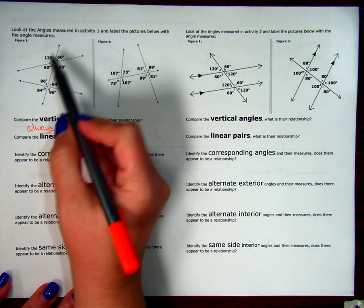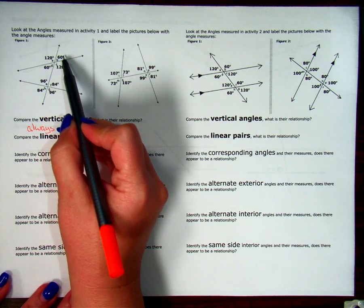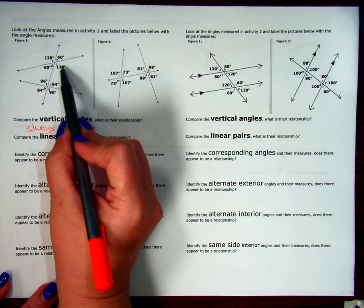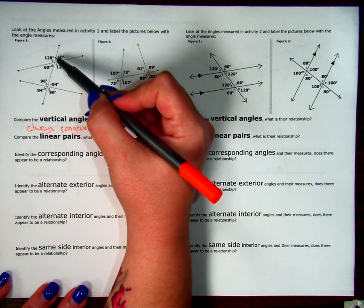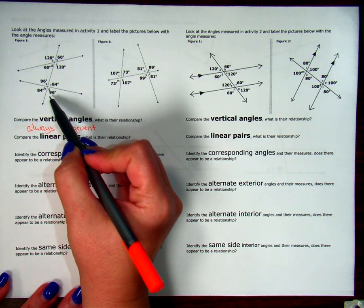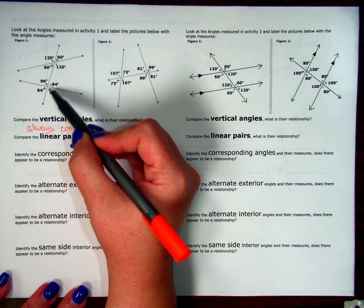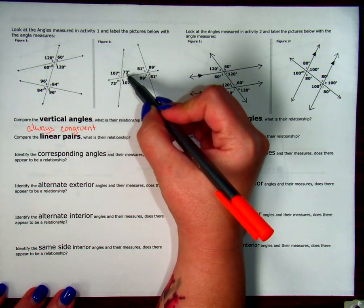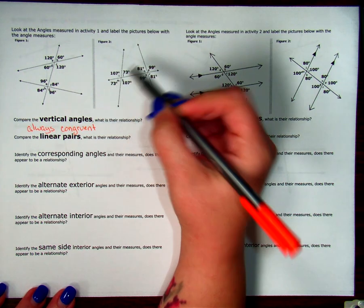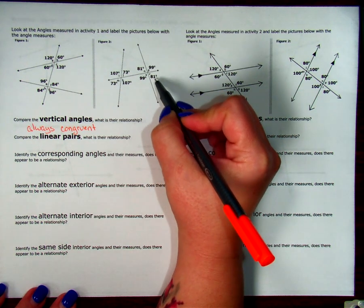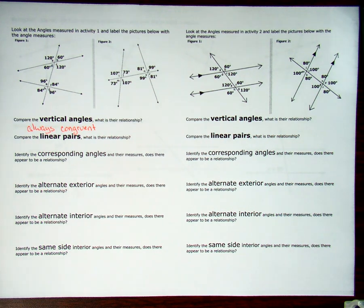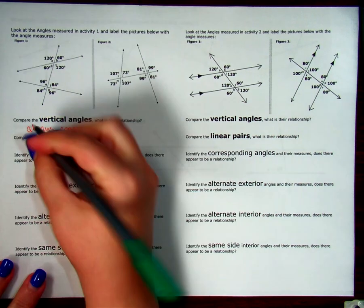When I look at linear pairs: 120 and 60 — they're not the same, but when I add them I get 180. 60 and 120 again — not equal, but they add to 180, they are supplementary. All of these linear pairs are supplementary. 96 plus 84 — supplementary. 84 plus 96 — supplementary. Over here, 107 plus 73 is 180, and 73 plus 107 is 180. 81 and 99 — supplementary. So when I compare my linear pairs, they always add up to 180 — they are always supplementary.